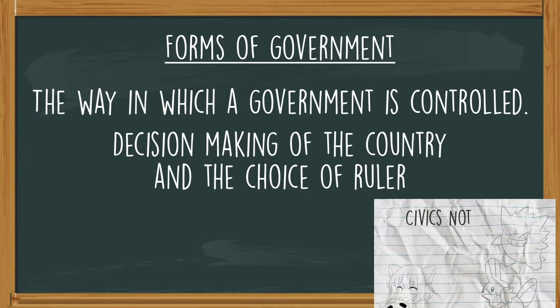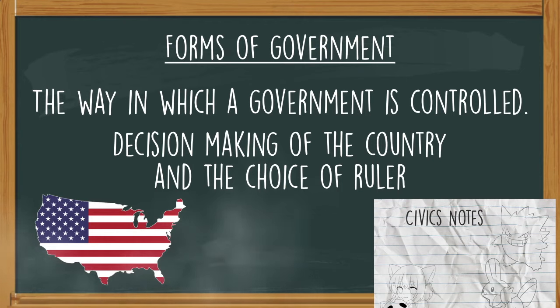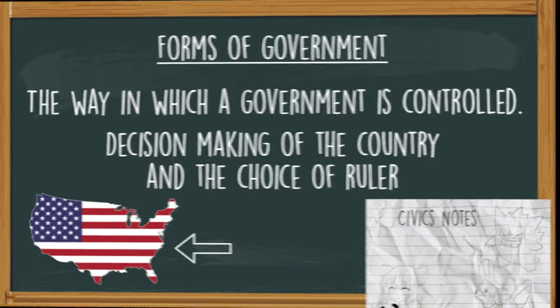Add this to your civics notes. Now that we understand that a form of government is the way in which a government is controlled, who has the power and control in America? What's our form of government? I'll give you a second to think about it while I set up the forms of government chart that we're going to be adding to the notes.